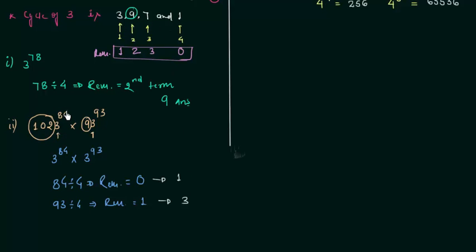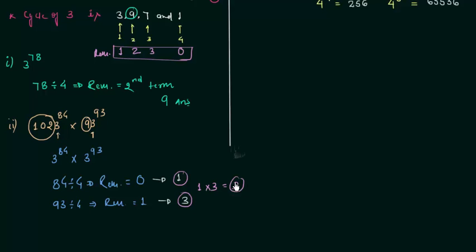1023 raised to power 84 will have 1 at the unit place, and 93 raised to power 93 will have 3 at the unit place. Since they are multiplied, we multiply 1 by 3, giving a result of 3. So 3 is the answer — this multiplication will have 3 at the unit place.